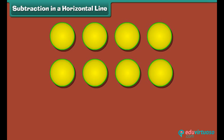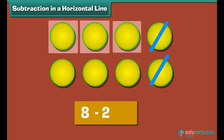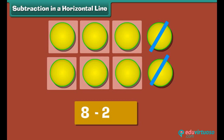To subtract two from eight, we place eight dots. Strike off two dots. Six dots remain. Therefore, six is the answer.